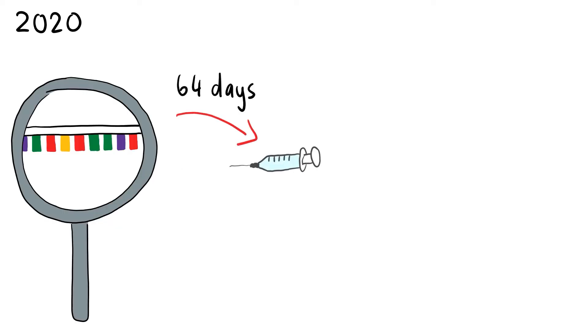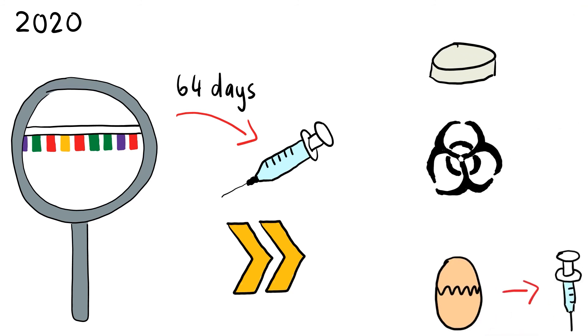In 2020, just 64 days after the sequence information for the coronavirus RNA was available, clinical trials for Moderna had started. The speed of mRNA-based COVID-19 vaccines was much faster due to not needing cell cultures, biohazard materials, or complex purification processes.